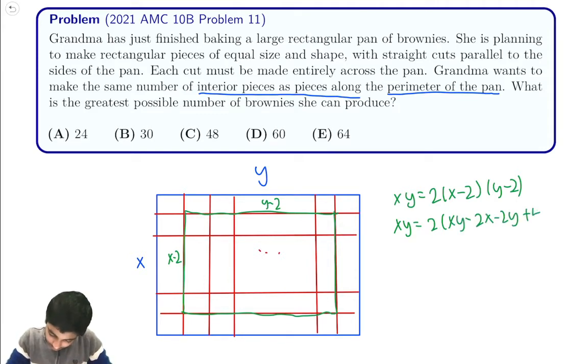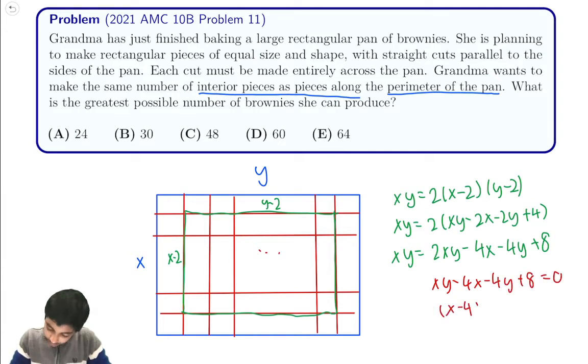From here we see that xy will equal 2xy minus 4x minus 4y plus 8. Then we see that xy minus 4x minus 4y plus 8 equals 0. So (x-4)(y-4) is going to equal 8.